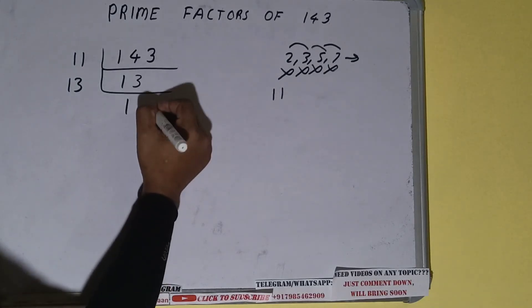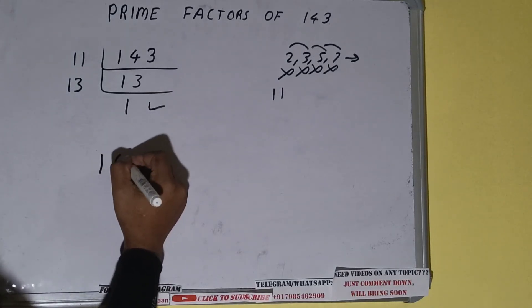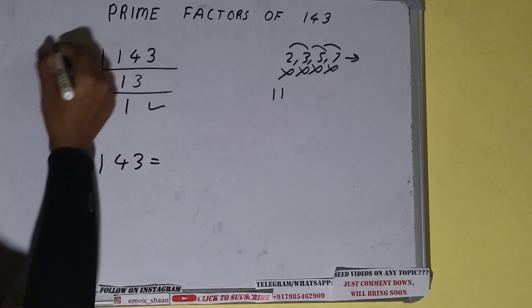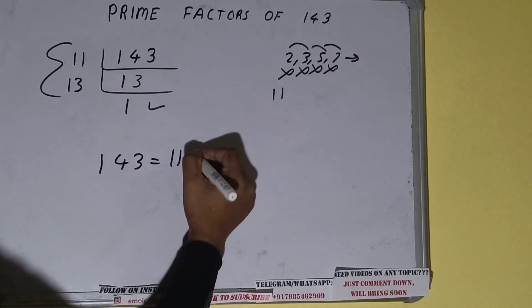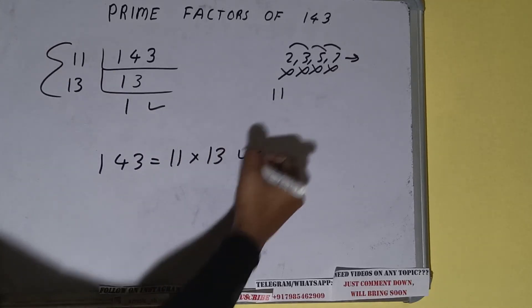Once we get 1, we need to stop and do one last thing. That is, the prime factors of 143 will be whatever we have on the left-hand side. That is 11 times 13. That would be the answer.